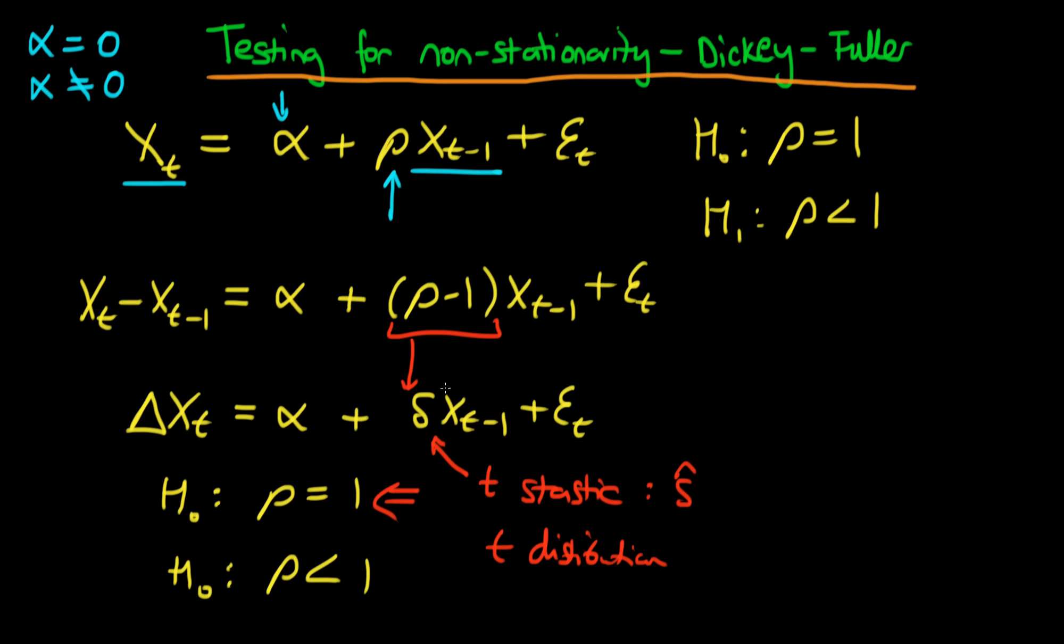But the problem is under the null hypothesis being true, xt minus 1 is itself non-stationary, so the ordinary central limit theorems don't apply when we're thinking about the estimators for delta. It's not the case that under a large sample size or asymptotic sample size that delta has a t-distribution or normal distribution.